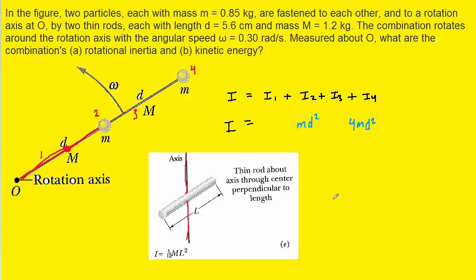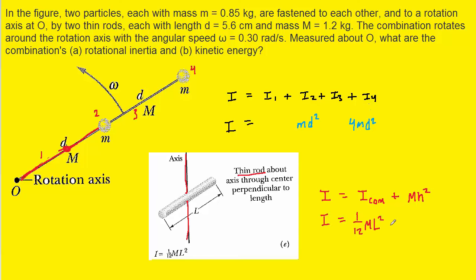Fortunately, there is a theorem known as the parallel axis theorem that allows us to modify this rotational inertia for the given scenario. The parallel axis theorem states that the rotational inertia is going to be the rotational inertia about the center of mass of the object plus the term m times h squared. For a thin rod, the rotational inertia about the center of mass is given by 1/12 ml squared. So we plug that in and add mass times h squared.